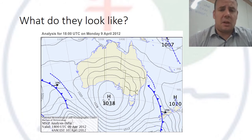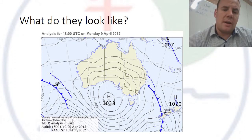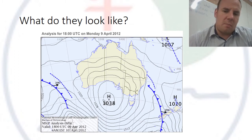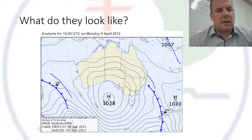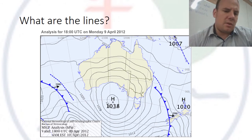So what do synoptic charts look like? Here we've got the whole of Australia. Those squiggly lines represent areas of equal pressure — we've got a big high pressure forming over most of Australia. How do we know if pressure is high or low? If we look at the numbers, they go from low to high toward the middle — that's where we get high pressure. Low pressure is the opposite.